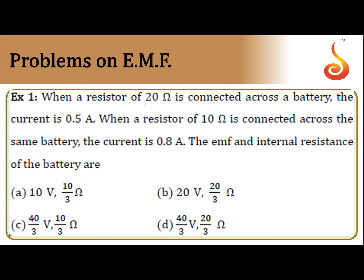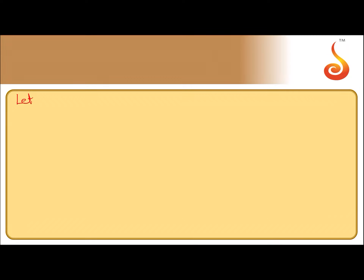So what is given: when 20 ohm is connected across the battery, current is 0.5 ampere; when 10 ohm is connected, it is 0.8 ampere. We need to find EMF and internal resistance. Let e be the EMF.